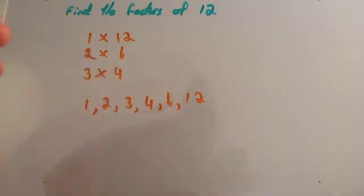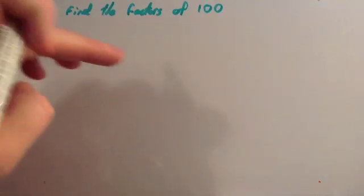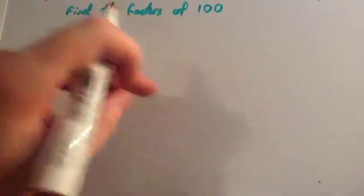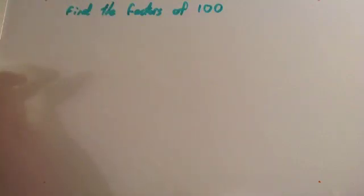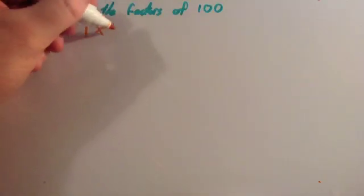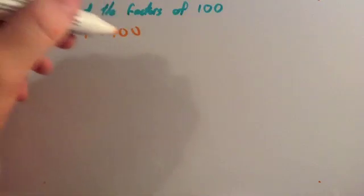Let's look at another example. This time we've been asked to find the factors of 100. So again, let's think of what times together to give you 100. Well 1 times 100 is 100. We always start off with 1 and the number itself.